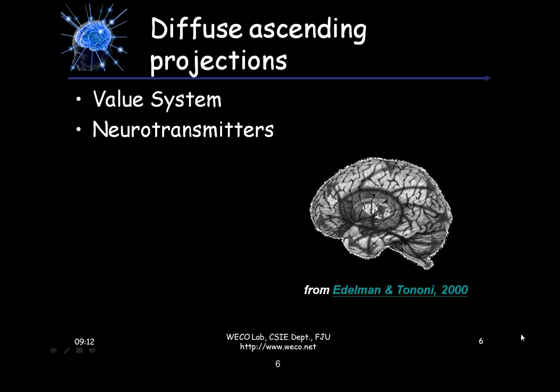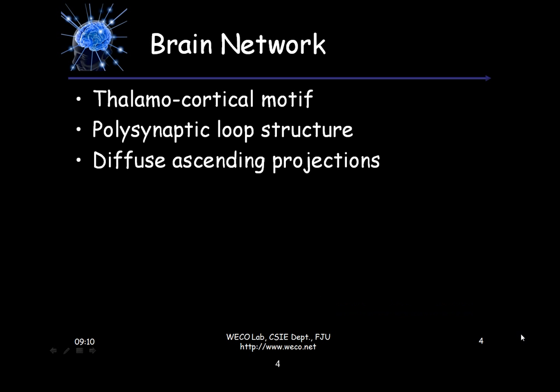We also have the second network, called the polysynaptic loop structure, which is based on the basal ganglia. I haven't studied this in more detail, so I will skip this second network and introduce it maybe in the next presentation.